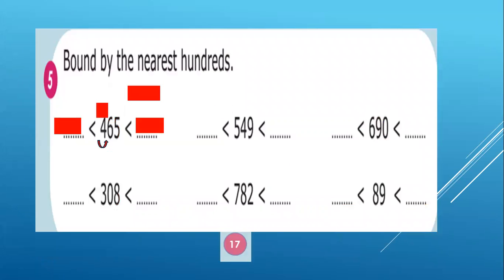Then open page 17. Now we have to bound by the nearest hundred. So the first step you have to do it here. You have to underline the hundred digit.